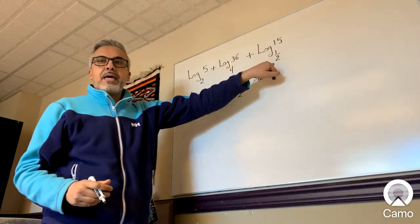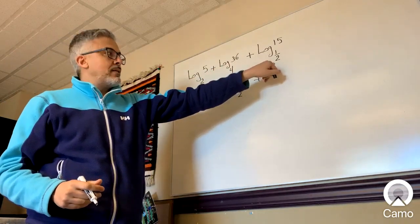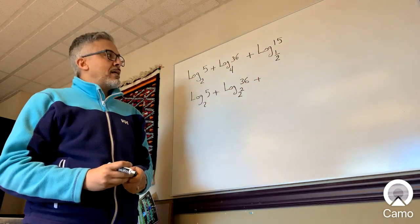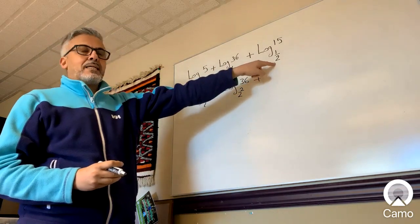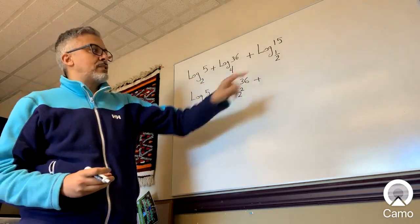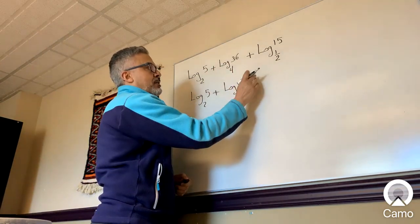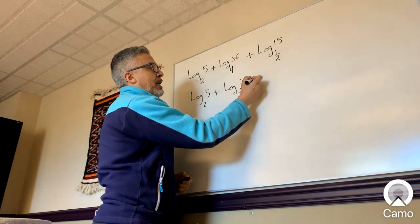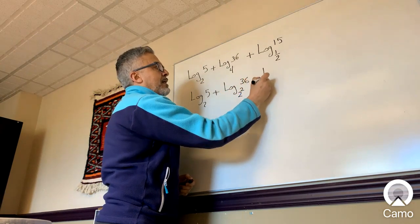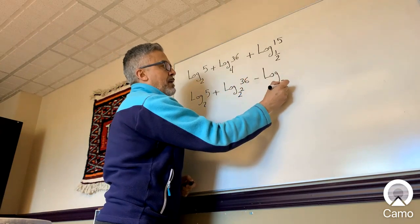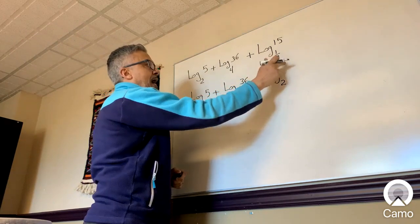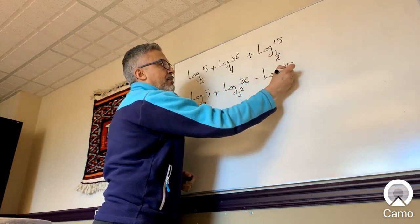And when you have a base that is a fraction, the shortcut is to make that base the same as this one, make it 2 instead of 1/2, and change this sign. If it's a plus, you make it negative. If it's a negative, you make it plus. So you could just change this sign, and then that allows you to make the base 2 instead of 1/2, 15.